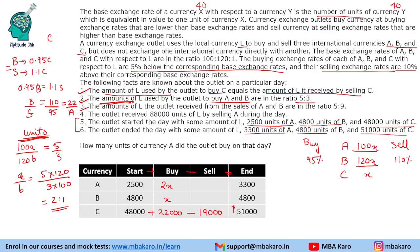Condition 3: the L received from sales of A and B is in the ratio 5:9. Applying the same logic with selling rates, the ratio of units sold: A/B = (5 × 120)/(9 × 100) = 600/900 = 2:3. So let 2y units of A and 3y units of B be sold.